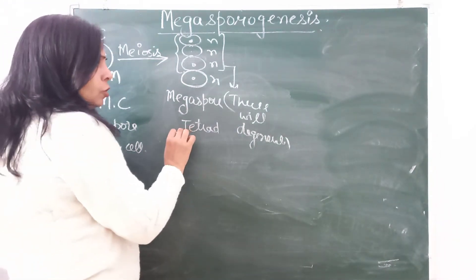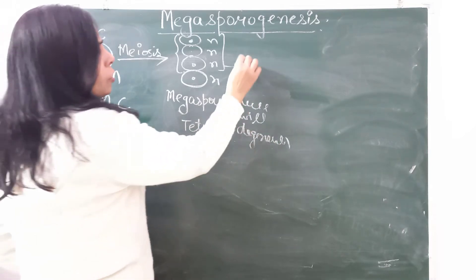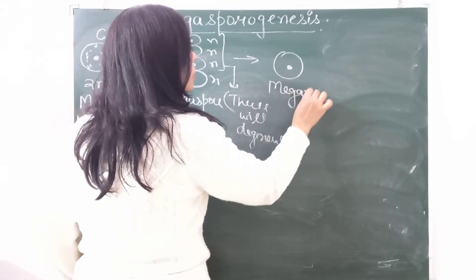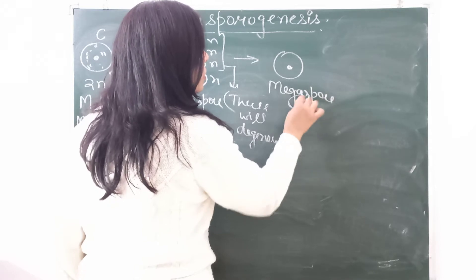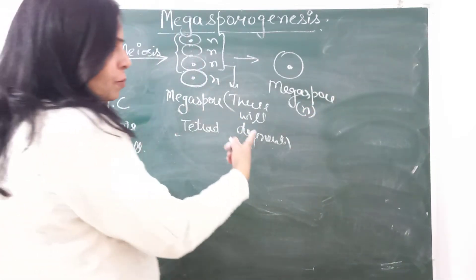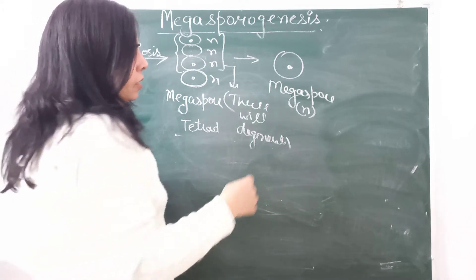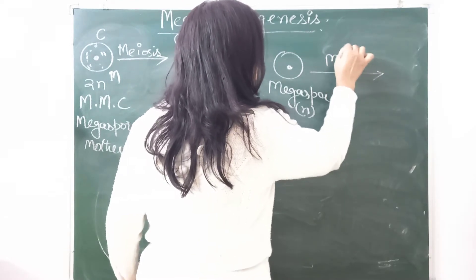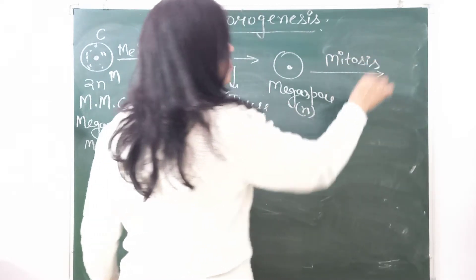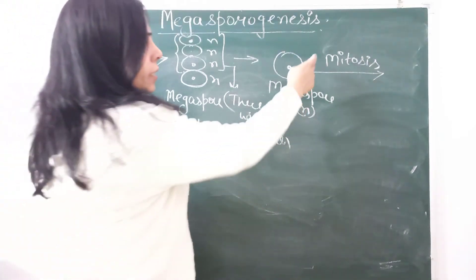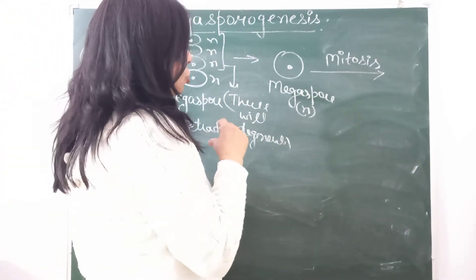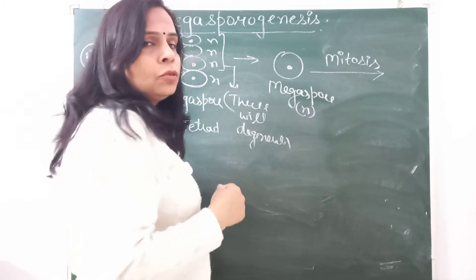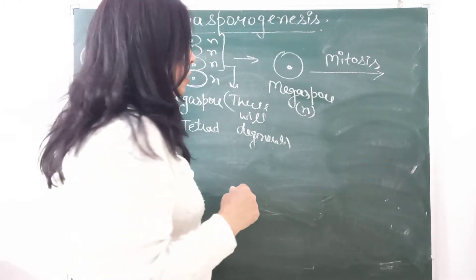Now from megaspore tetrad, three have degenerated. So what is left? There is left only one megaspore. This megaspore is haploid. So the sporophyte underwent meiosis, four spores formed. Now what will happen? Mitosis. The functional megaspore will undergo mitosis. The embryo sac which will form is forming from one spore. That is why embryo sac formation is also known as monosporic development of embryo sac.